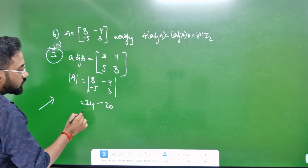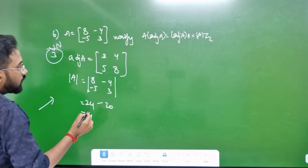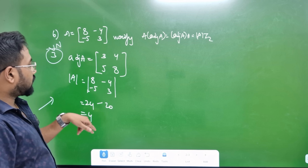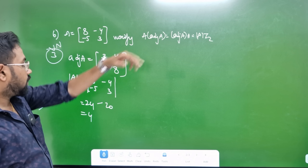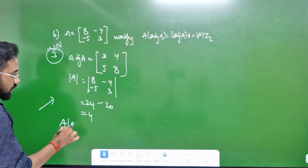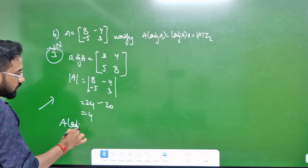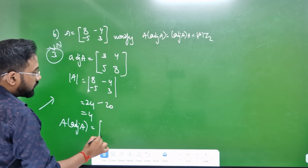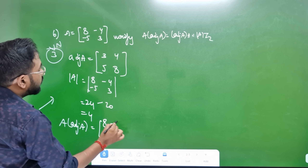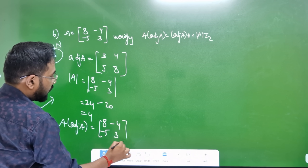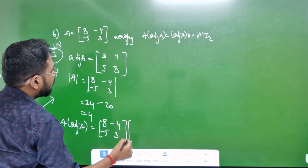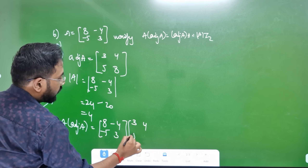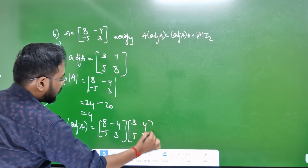Minus 20. 24 minus 24. Determinant is equal to 2. A into A — 2 into the same. A is equal to 8, minus 4, minus 5, 3. Adjoint A is equal to: 3, 4, 5, 8. In this way, 84 is equal to 4.